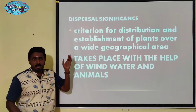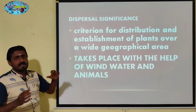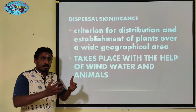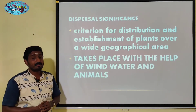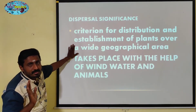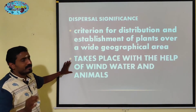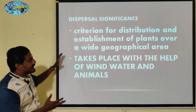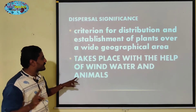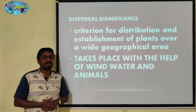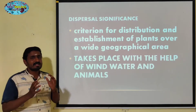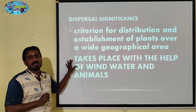I like dispersal. The geographical area is also covered — no matter how great the geographical area is. It takes place with the help of wind, water and animals. Birds, insects, wind, water and animals are also involved in the seed dispersal method and are used as agents for seed dispersal methods.